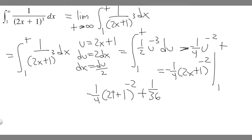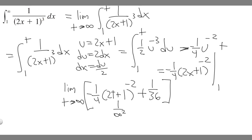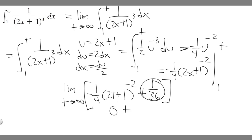Now we evaluate the limit as t approaches infinity of this whole expression. Replacing t with infinity: 2 times infinity is infinity, plus 1 is still infinity. So we get infinity to the minus 2, which is the same as 1 over infinity squared. Since infinity squared is an extremely large number, 1 over infinity squared approaches 0. So minus 1 over 4 times 0 is still 0. That leaves us with 0 plus 1 over 36, which is just 1 over 36.